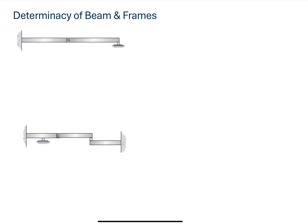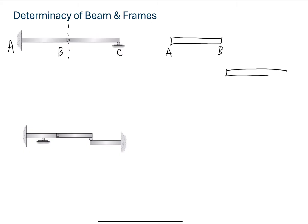Let's look at some examples on determinacy of beams and frames. First, we have a beam supported on a roller support and a fixed support. Support A is here and support C is over here. On the beam, we have a hinge at point B. When we see a hinge on a beam, we cut the beam into two parts at the hinge. So then we have two parts: segment AB and segment BC.